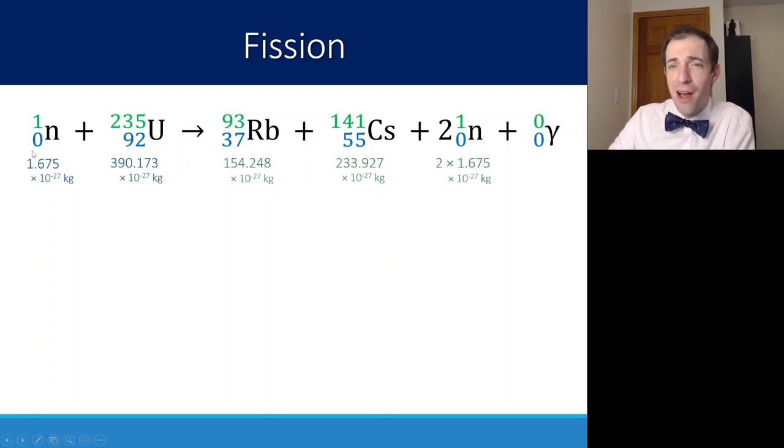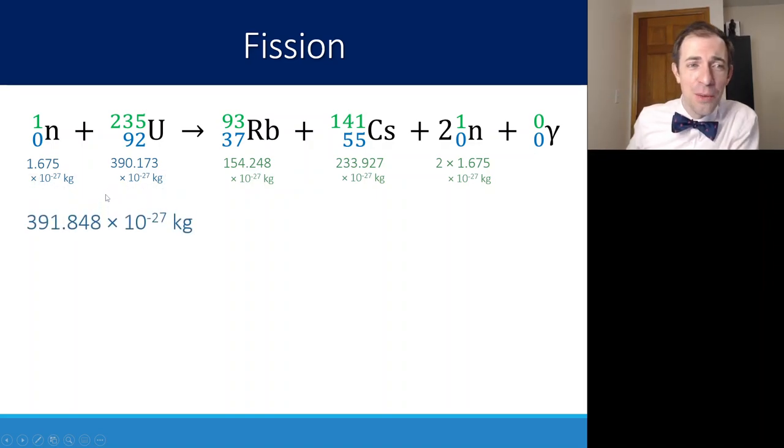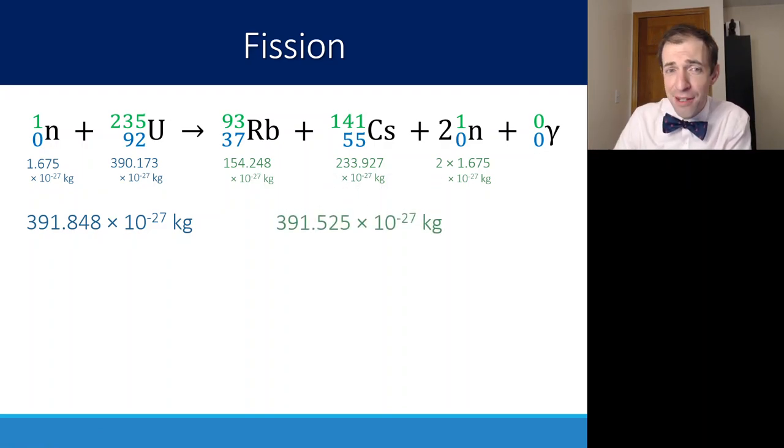Let's look at another example of a fission reaction here. We again are starting with a neutron and uranium-235. We know the mass of a neutron. We can find that on our table. We also can be given the mass of uranium. These are all in kilograms here, the mass of rubidium, the mass of cesium, and then two neutrons, so I'll just multiply that by two. It's going to produce some energy as well that will have no mass. What we care about is we're going to compare the mass before to the mass after. The mass before is 391.848 times 10 to the negative 27 kilograms. The mass after is 391.525 times 10 to the negative 27 kilograms.